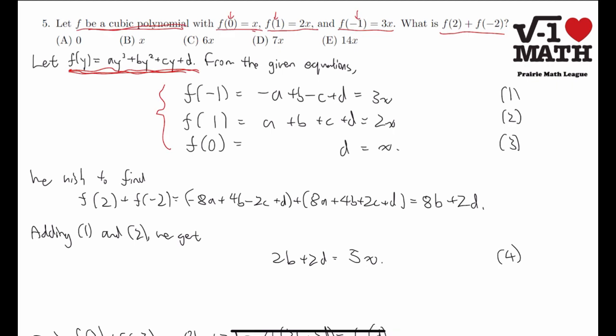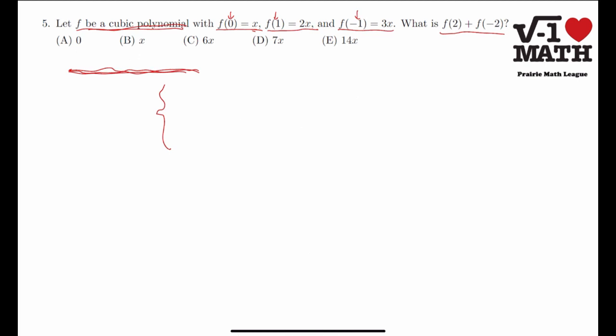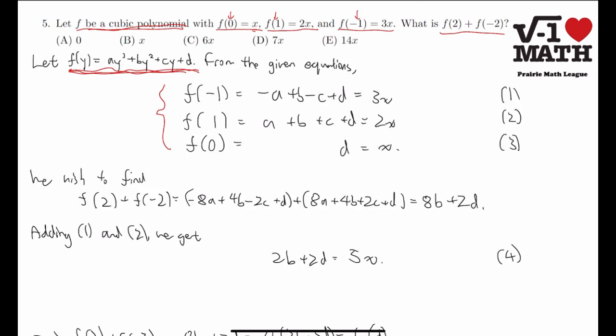So again, we're just substituting y. Here we have f(-1) equals negative a... oopsies, f(-1) equals negative a plus b minus c plus d, f(1) equals a plus b plus c plus d, and f(0) is d. But we also know from these conditions over here that these are equal to 3x, 2x, and x, respectively.